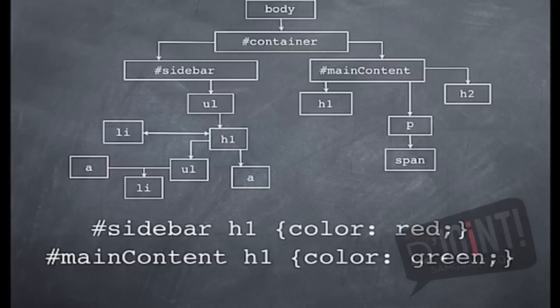With these two separate descendant selectors written in the document, the appropriate color would be given to each one. The sidebar would get its red declaration, and the main content would get its green information. So that means that all of the H1 tags under the sidebar would be red, and all of the H1 tags under the main content area would be green.